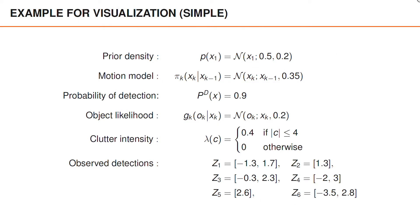To visualize what these densities look like, we return to the toy example first studied in the video about the conceptual solution to single-object tracking. Both the measurements and the state are scalar variables. We have a Gaussian prior at time one, and both pi_k and g_k are assumed linear and Gaussian. Also, both the probability of detection and the clutter intensity are assumed constant within the area of interest.